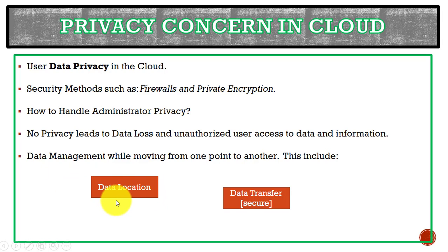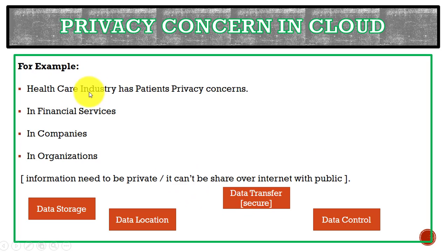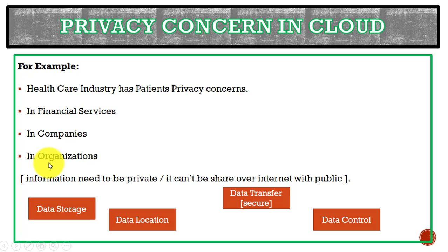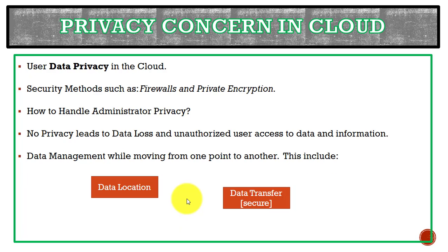For data management, we need to manage data while moving from one point to another, which includes data location and data transfer. For example, in the healthcare industry we have patient privacy concerns — we need to keep patient records private from third parties. Similarly, in financial services and organizations, information and data need to be kept private so it cannot be accessed or shared publicly by third parties.